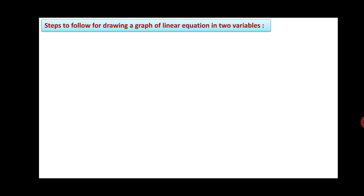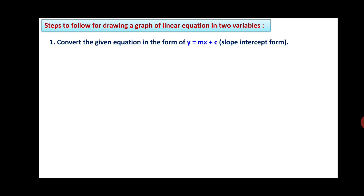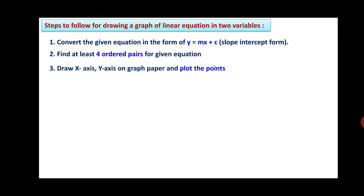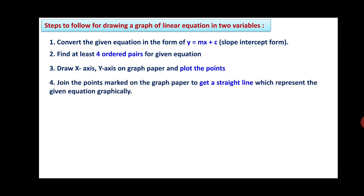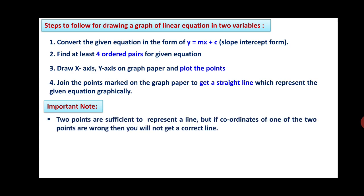Friends, here are the steps to follow for drawing the graph of linear equations in two variables. First, convert the given equation into the form y equals mx plus c. Then, find at least 4 ordered pairs for the given equation — this is very important, 4 must be considered. Draw the x-axis and y-axis on the graph paper and plot the points. Join the points marked on the graph paper to get a straight line which represents the given equation graphically. Now, why 4 ordered pairs?